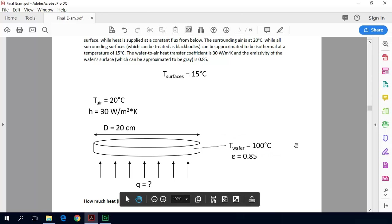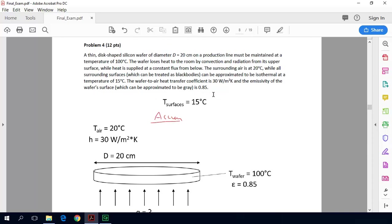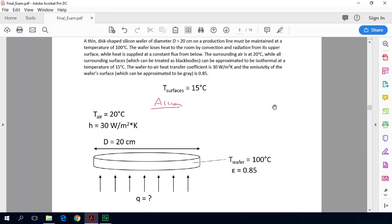So we're actually going to start by doing a really simple energy balance. So we're going to look at the accumulation. This process is going to be at steady state. The wafer surface must be maintained at a temperature of 100 degrees Celsius, so we are going to assume that this is at steady state. So our accumulation term is zero. Our in term is going to be this q down here that we're looking for. Then we're going to have a couple of different out terms.